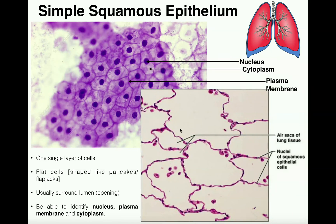This micrograph is taken from the lungs. One place we find simple squamous epithelium is in structures called alveoli of the lungs, which are responsible for gas exchange. The reason these cells are so thin is to increase the diffusion rate. Because oxygen and carbon dioxide don't have to diffuse very far through thin cells, flat cells are perfect for gas exchange.